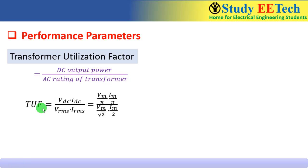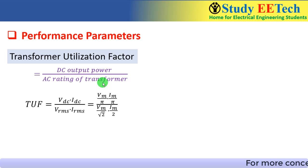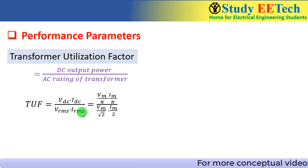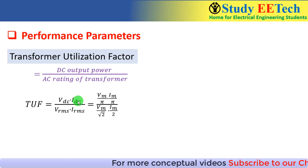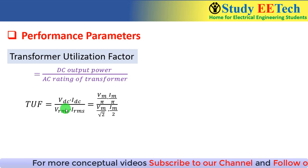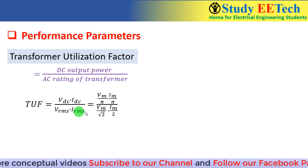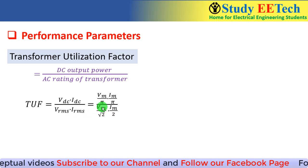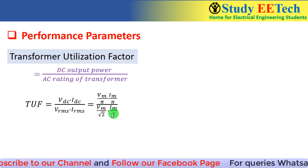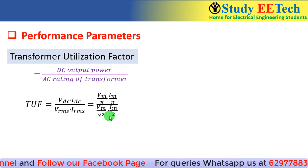In the expression of transformer utilization factor, the DC output power can be written as Vdc × Idc, and the AC rating of the transformer can be written as Vrms × Irms. Now we can put the value of Vdc and Idc. The value of Vrms is Vm / √2 and Irms is Im / 2 — you can see there is a difference here.